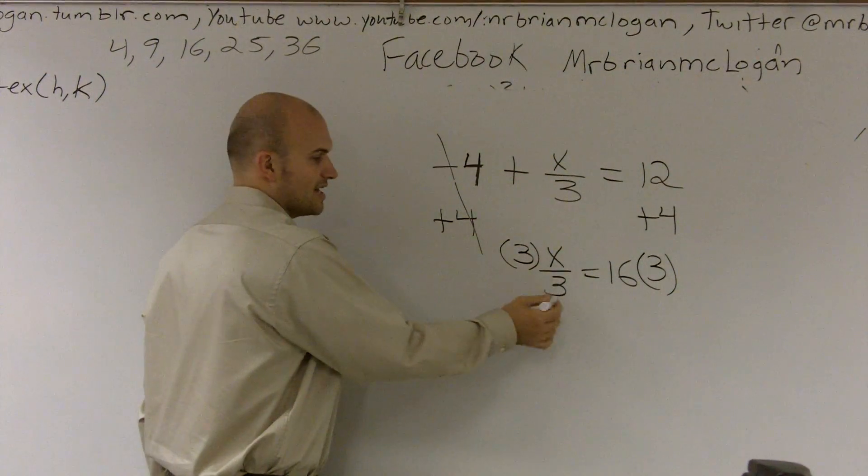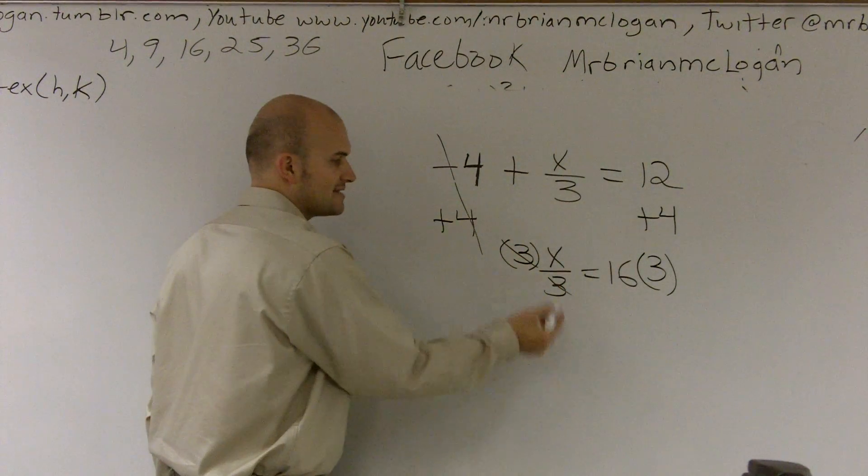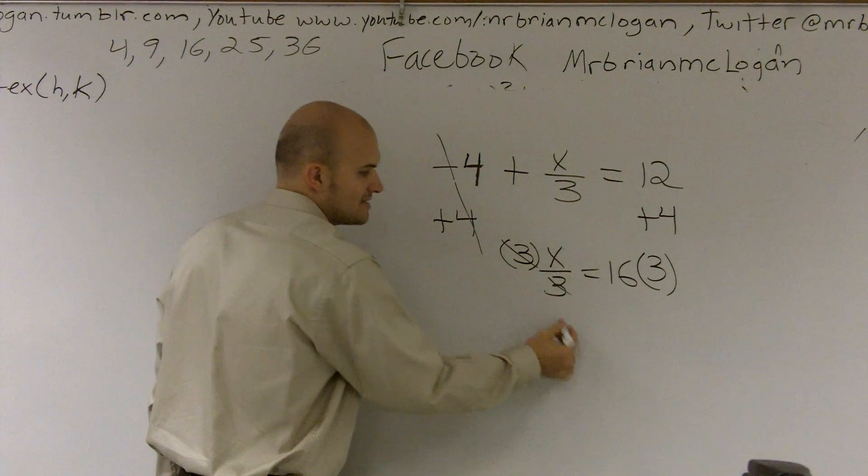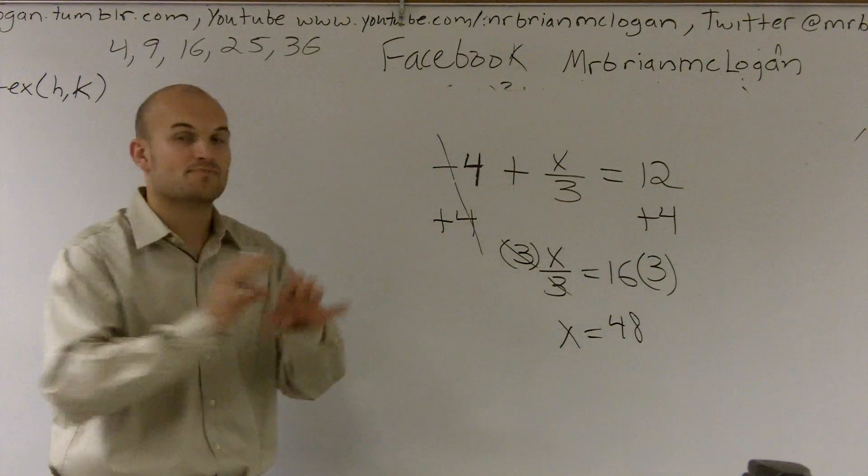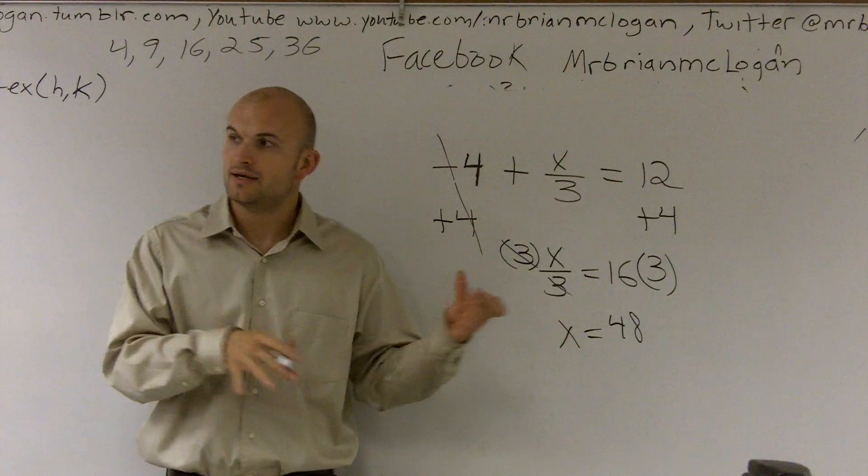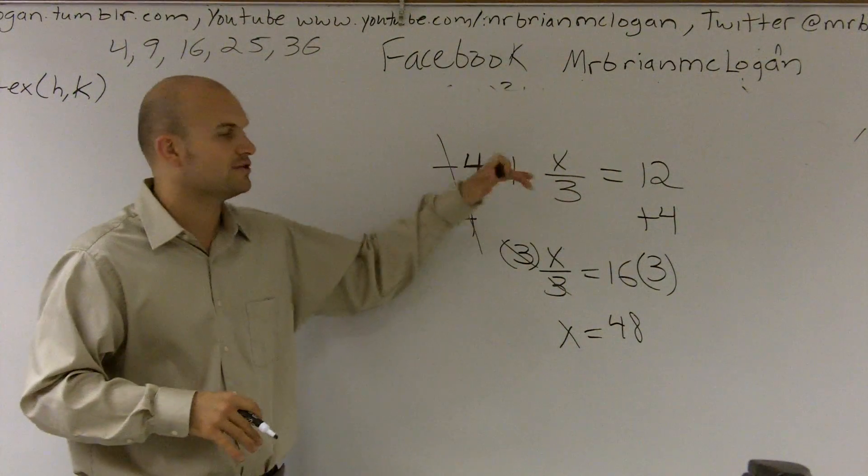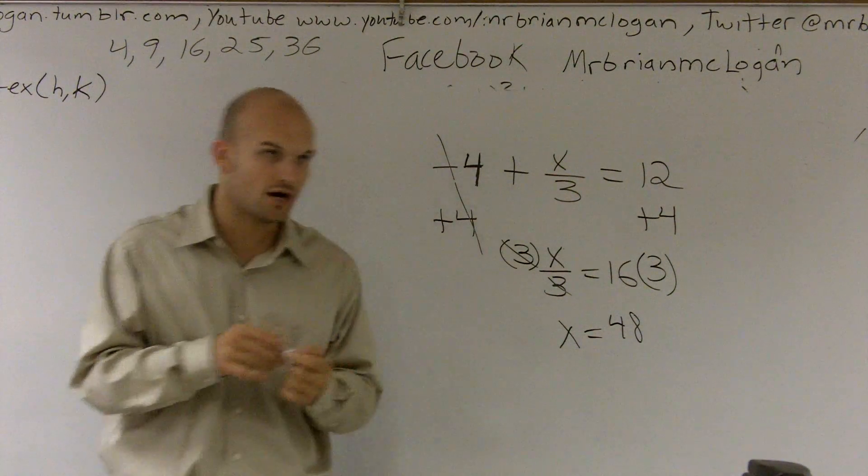Now, 3 divided by itself. Again, we say it cancels out. It becomes 1. 1 times x is x. 16 times 3 equals 48. All right? So, there's probably a lot of different ways you guys can make little mistakes. Just make sure you guys are showing your work and using the inverse operation.